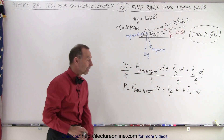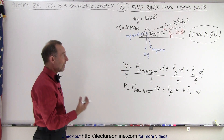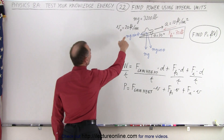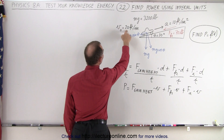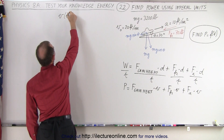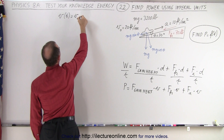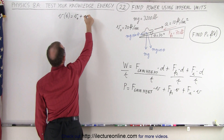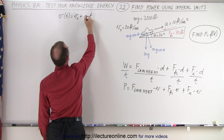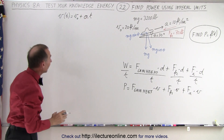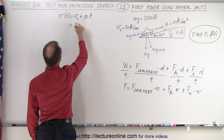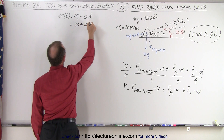Now we realize that velocity is not going to be a constant value because the car is accelerating. The car starts with an initial velocity, so we can say that velocity as a function of time equals the initial velocity plus acceleration times time. Plugging in the numbers, this is equal to 20 + 10t, which is the velocity as a function of time.